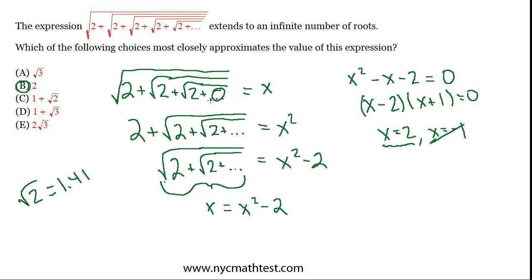Then you do 2 plus that — that's a little closer to 4 — and take the square root of that, which is a number a little smaller than 2, but closer to 2 than the previous result. You repeat this process, and what you'll find is that as you do it more and more times, the answer converges — it starts to approach 2. Eventually you'd get something like 1.999. That's another way to go about this, and it'll convince you that 2 is the best choice. Hopefully the algebraic solution makes sense as well.